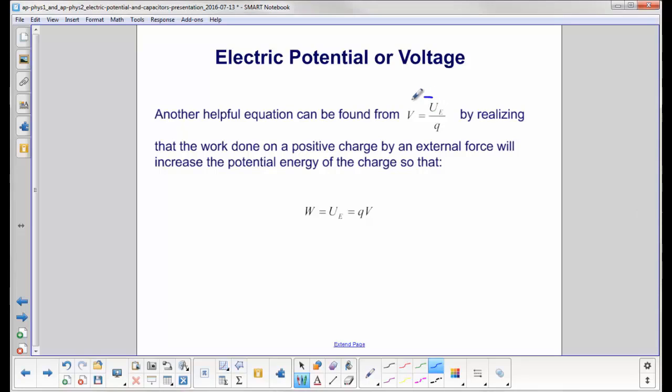Using the definition of electric potential or voltage, we multiply both sides by Q, and we have this down here. Then realize that if you do work on a positive charge with an external force, the potential energy of that charge will increase. So positive work will be positive potential energy, positive charge times voltage.